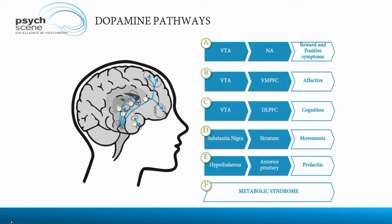Quickly summarizing: the mesolimbic pathway is responsible for positive symptoms and is also the reward pathway. The mesocortical pathway to the ventromedial prefrontal cortex is responsible for affective or mood symptoms. The ventral tegmental area to the dorsolateral prefrontal cortex — again part of the mesocortical pathway — is responsible for cognition and negative symptoms. The nigrostriatal pathway is responsible for movements. The tuberoinfundibular pathway mediates prolactin secretion. And we should always keep metabolic syndrome in mind, as individuals with schizophrenia are inherently predisposed to developing metabolic dysfunction, which will affect the choice of medication.